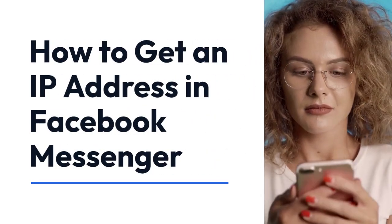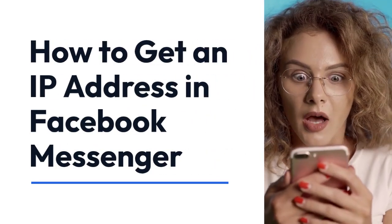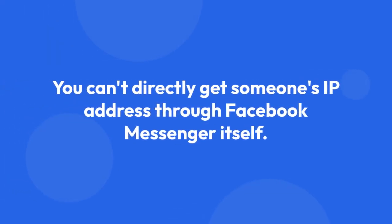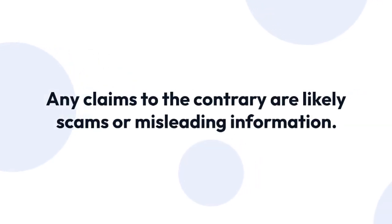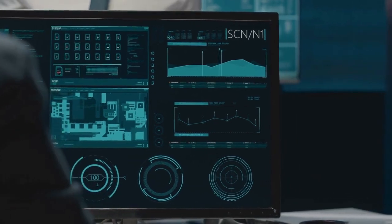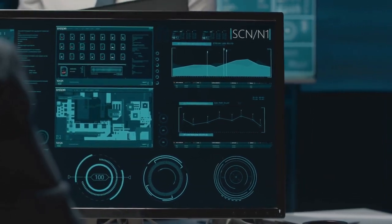We're going to explain how to get an IP address in Facebook Messenger. The short answer is, you can't directly get someone's IP address through Facebook Messenger itself. Facebook employs robust security measures to protect user privacy, and directly accessing IP addresses via their platform is not a feature they provide to users. Any claims to the contrary are likely scams or misleading information.